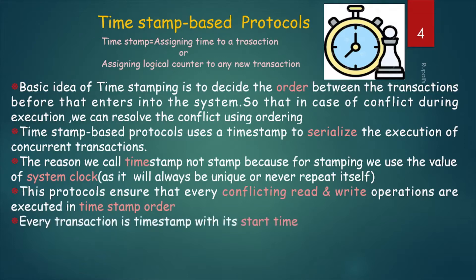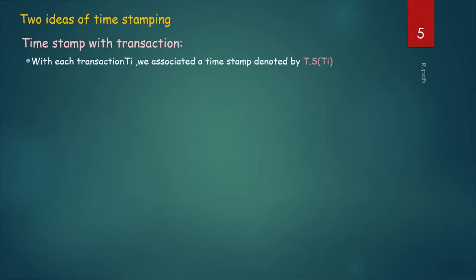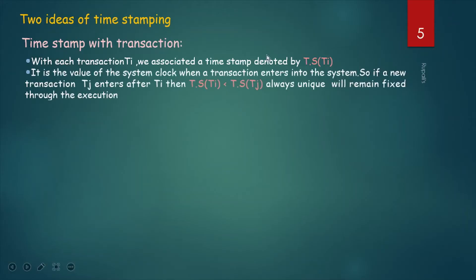Every transaction has a timestamp, and the start time is the timestamp of that transaction. There are two ideas for timestamping. The first is timestamp with transaction. Say there is one transaction Ti — we denote its timestamp as TS(Ti). It is the value of the system clock when the transaction enters the system. If a new transaction Tj enters after Ti, then TS(Ti) < TS(Tj). For example, Ti enters at 10 a.m. and Tj enters at 11 a.m., so Ti comes first. The timestamp is always unique and remains fixed throughout execution.